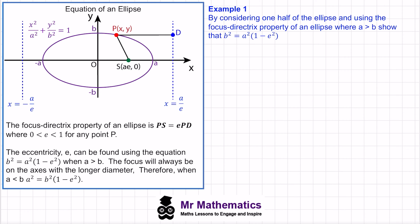In this video we're going to look in more detail at the equation of an ellipse, and in particular the eccentricity value. We've come across the focus and directrix property of other conic sections such as parabolas. However, the property for an ellipse is that the distance between any point on the ellipse and the focus point PS equals the eccentricity value — which is always between zero and one — multiplied by the distance PD from the point perpendicular to the directrix.